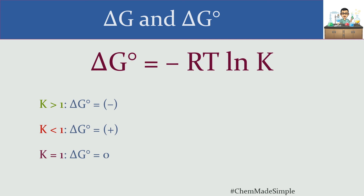Sometimes you'll see delta G naught prime, where the prime symbol means you're looking at a pH of 7. You primarily see that in biochemistry, but it's not something encountered very often. You would treat delta G naught prime just as you would delta G naught — it's a constant very specific to the reaction.